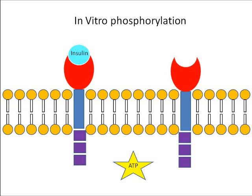After the phosphorylation, the insulin receptor was added to an SDS-PAGE buffer and then to an SDS-PAGE gel to undergo gel electrophoresis. This gel electrophoresis separates the protein, which needed to be done prior to the immunoblot analysis.